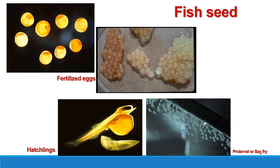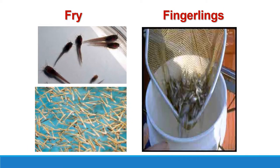The fourth stage is pro-larval or sac fry. In this stage, the yolk sac still persists. In this slide, you can observe the fry — about 2 cm long — which can now eat small-sized zooplanktons. The next is the fingerling stage, which is about 15 cm long, and may vary from 4 to 12 cm in some cases. All these stages together are known as fish seed.